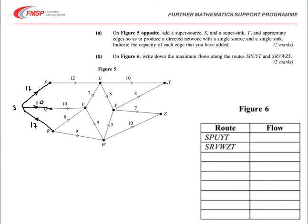Similarly, at the other end, the super sink T needs to be added in. Y to T, we've got a total of 8 plus 10 is 18. And from Z to T, a total of 7 plus 10 is 17. So that's the super sink and the super source added in.